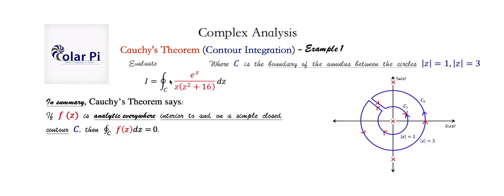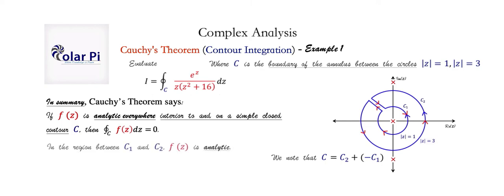You saw that I just traced C and it's a simple closed contour. Now, for this function f of z, it is not differentiable — meaning it is not analytic — only at z equals 0 and z equals plus or minus 4i. Places where a function is not analytic are called singularities. The singularities of this function are marked with x's: the origin, negative 4i, and positive 4i. Notice that the singularities are outside of the annulus, and therefore outside of what C encloses. Because everywhere inside and on C, this function f of z is analytic. Using Cauchy's theorem, we can conclude that the integral is equal to 0.